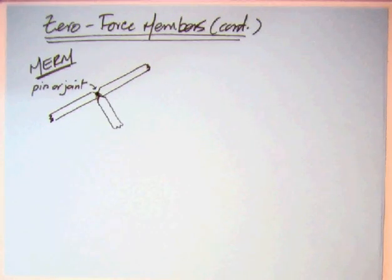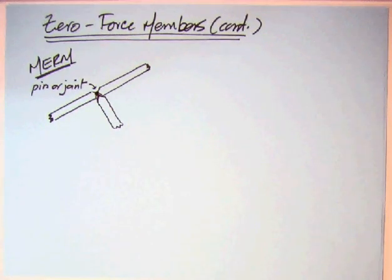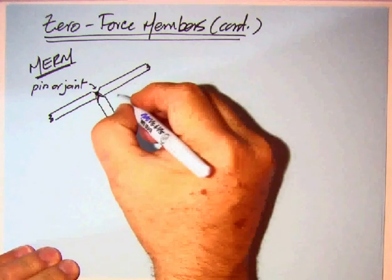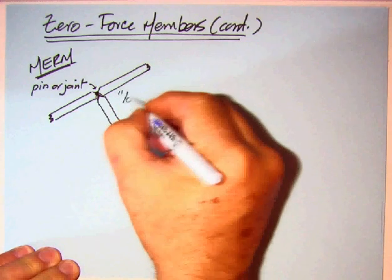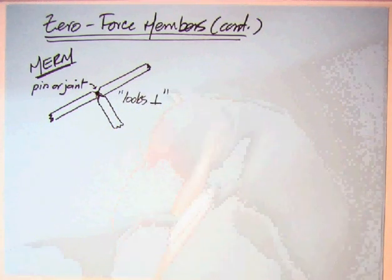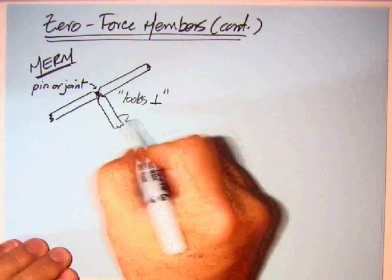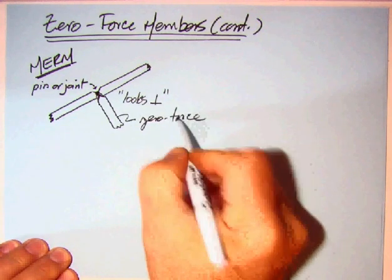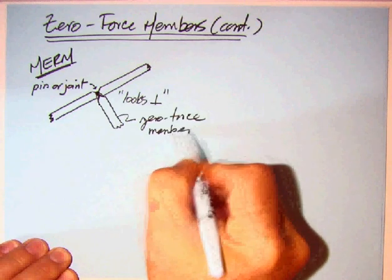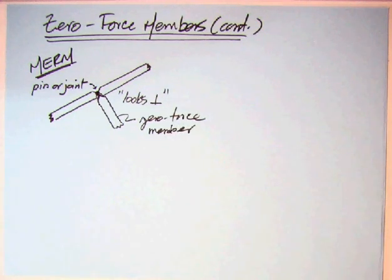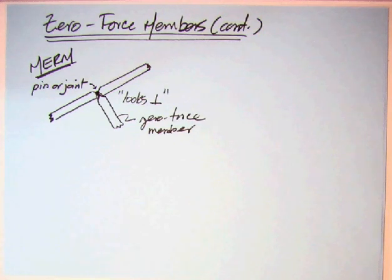In the MERM, there's a figure where you have three members coming in at a pin or joint. The issue is that while it's not stated, it looks perpendicular — and that does, in fact, confuse people. But it is indeed a zero force member. These two members are collinear; they have the same line of action, so the third member is zero. The thing is, it looks 90 degrees, but it doesn't have to be.